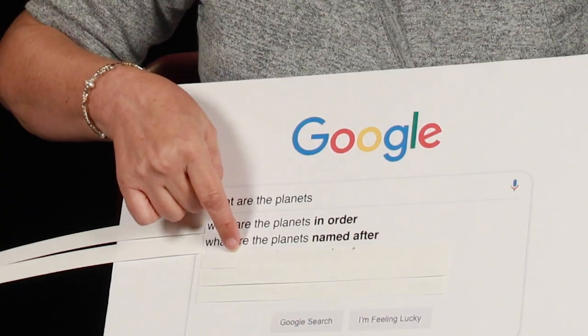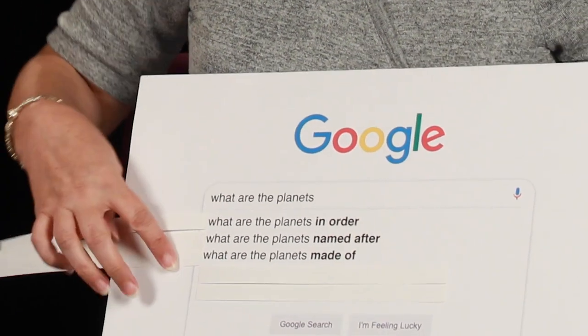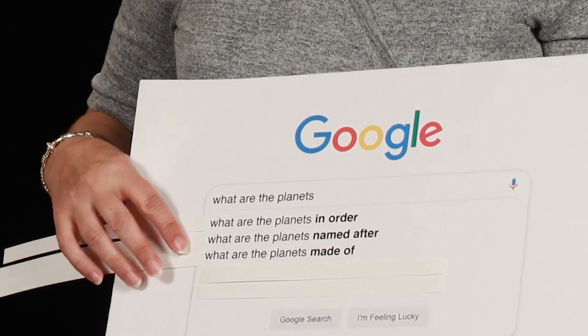What are the planets made of? Well, so the terrestrial ones are made of, the terrestrial ones, meaning like the ones that are closer. Yeah. So Mercury, Venus, Earth, Mars. Right. They're the terrestrial ones. They have surfaces. So they're made of like rock, mostly. And then with metal in the core. Maybe some molten rock too.